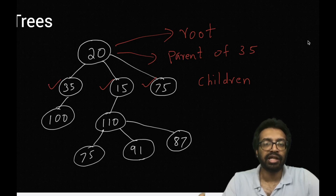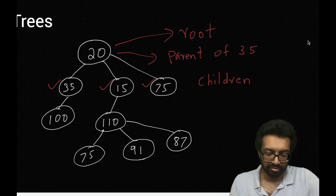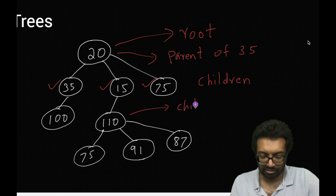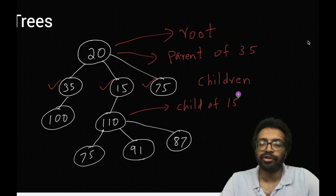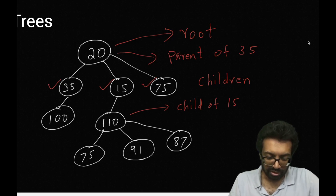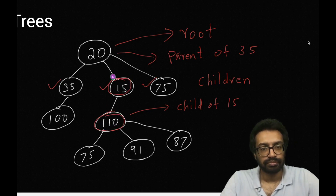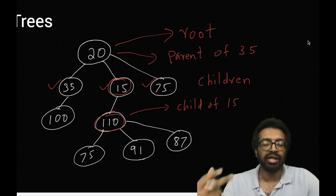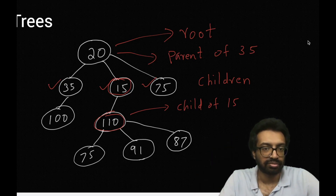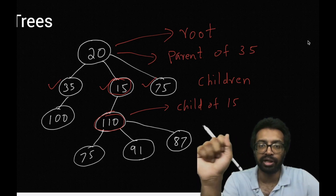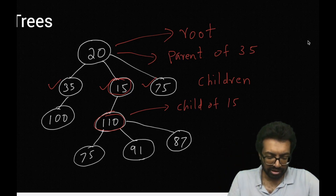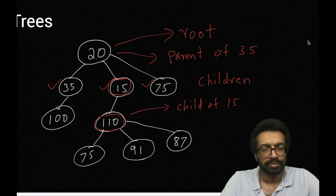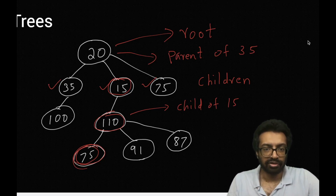Give me a child of 15 — 110, right? So this is a child of 15. Even though I have used 'the child of 15,' that is not the proper way to use it. I should say this node is a child of this node. Why? Because as you can see, this tree has two 75s. So what is the parent of 75? That is not a good question, because it has two 75s and there can be two parents. The question to ask always is: who is the parent of this node? The parent of this node is the node above.